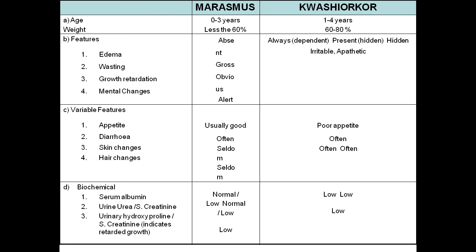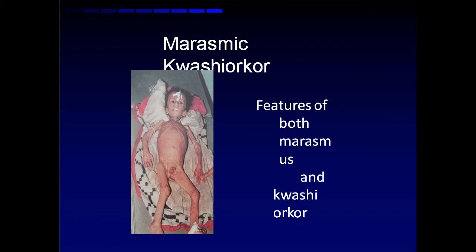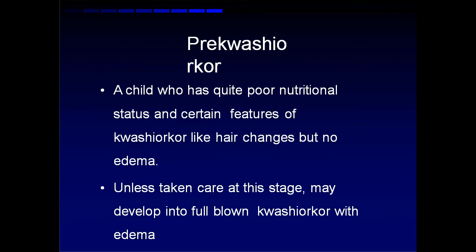Marasmic Kwashiorkor has features of both marasmus and Kwashiorkor. Pre-Kwashiorkor refers to a child who has quite poor nutritional status and certain features of Kwashiorkor like hair changes, but no edema. If you take care at this stage, you will save the child; otherwise it can progress to full-blown Kwashiorkor with edema. It is better to intervene early.